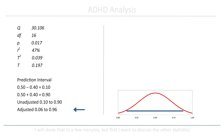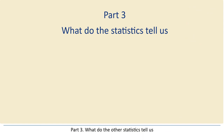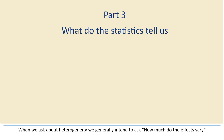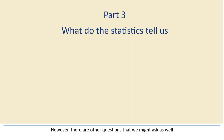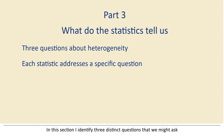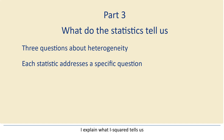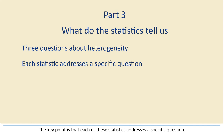Part 3: What do the other statistics tell us? When we ask about heterogeneity, we generally intend to ask how much the effects vary. However, there are other questions that we might ask as well. In this section, I identify three distinct questions that we might ask, and I explain that each statistic is intended to address one specific question. I explain what the Q value and p-value tell us, what I-squared tells us, and what the prediction interval tells us. The key point is that each of these statistics addresses a specific question. The Q value, p-value, and I-squared do not tell us how much the effect size varies. Only the prediction interval provides that information.